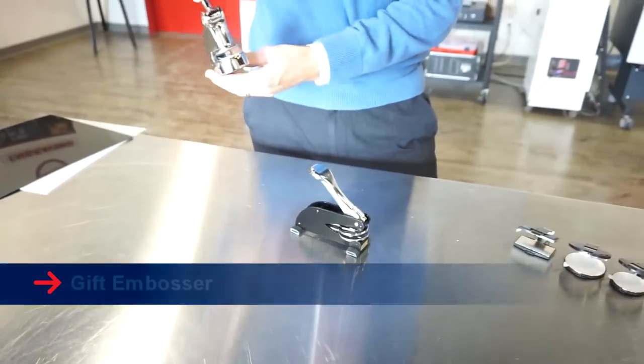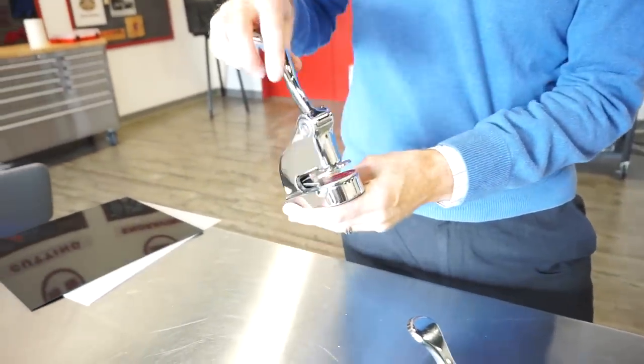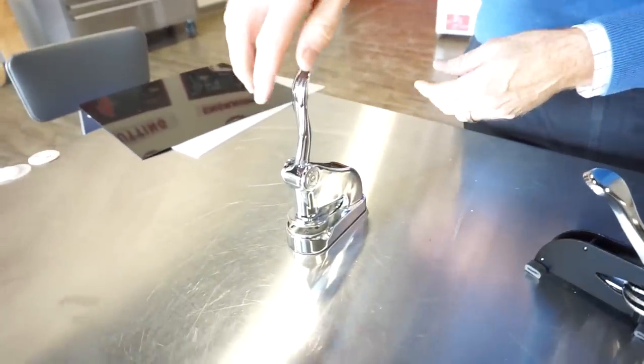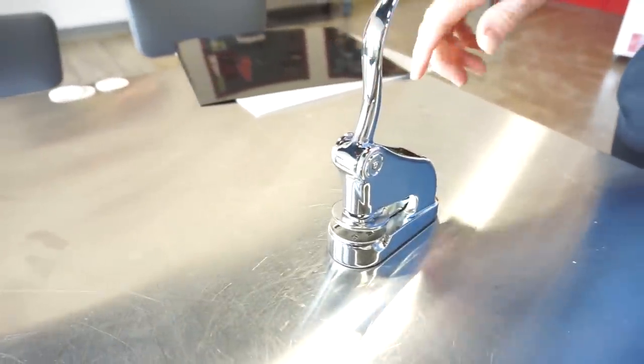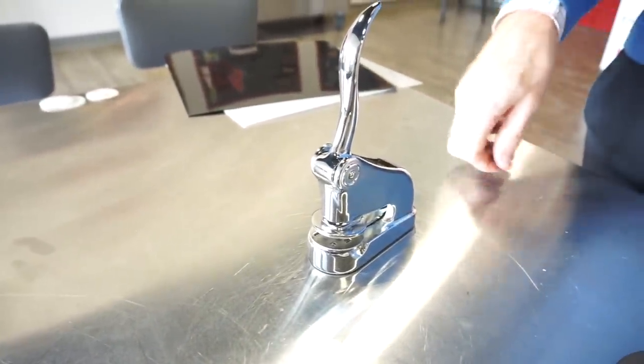The other option we have is what we know as a gift embosser. It's more of a fancy, old fashioned version and it works the same way the other ones do. It's just a little more fancy looking. A lot of lawyers do like it.